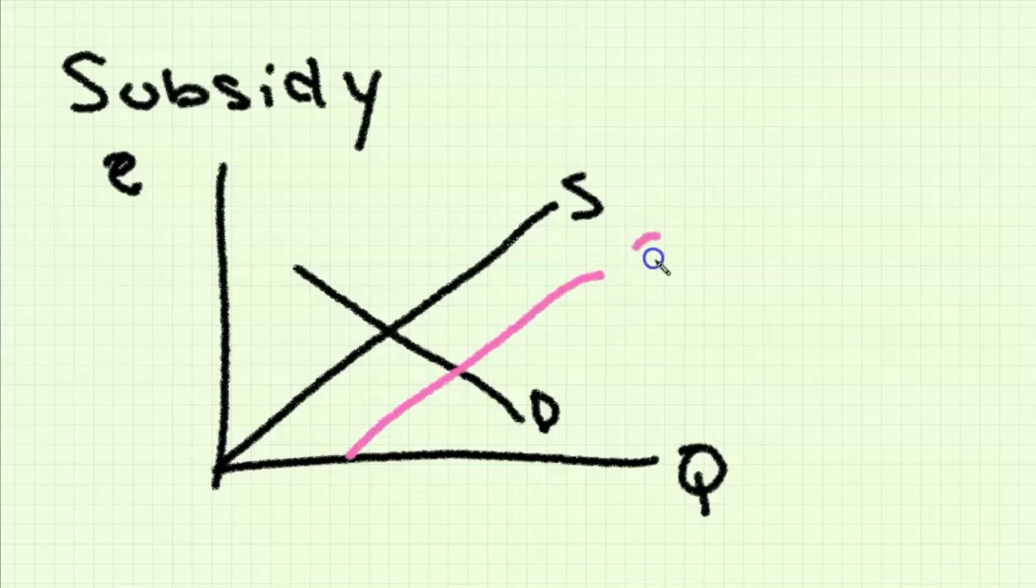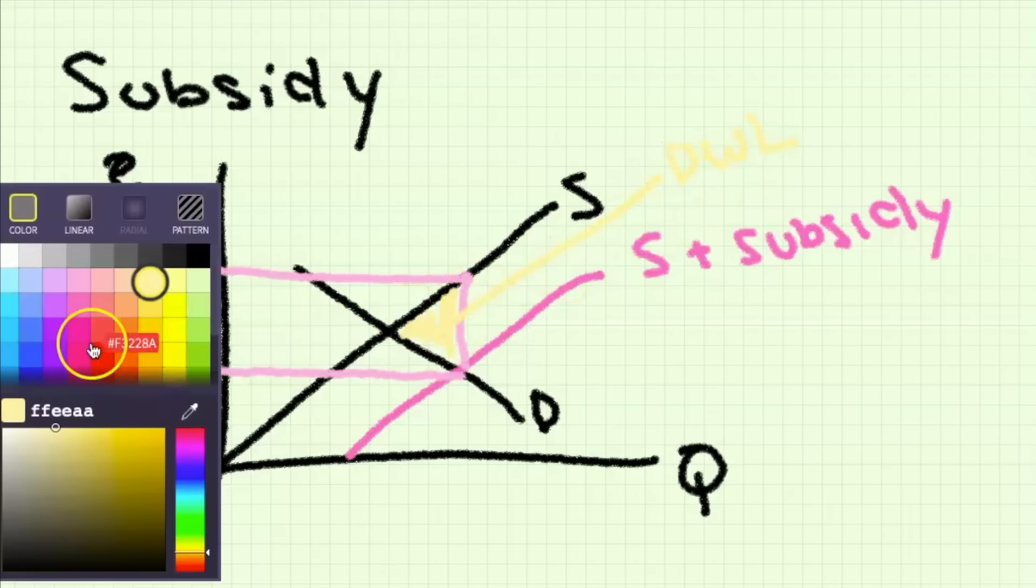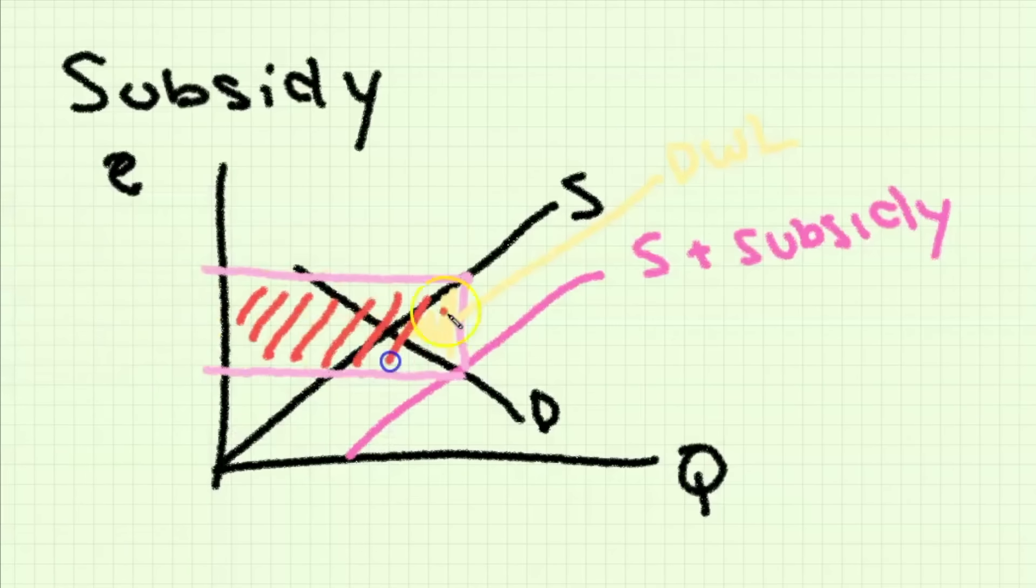A subsidy on the other hand is simply the opposite of a tax because it's a grant made by the government to producers in order to lower their cost of production so the supply curve actually shifts to the right. This also leads to an inefficiency or inefficiency loss as shown by the deadweight loss because it's a government intervention, and the entire rectangle is the amount of money that the government has to pay in order to finance the subsidy.